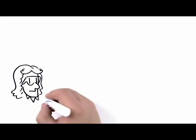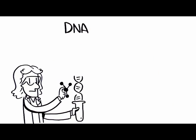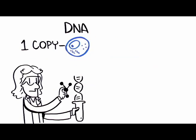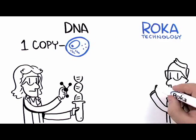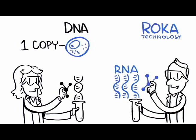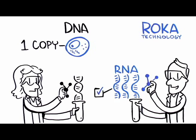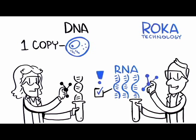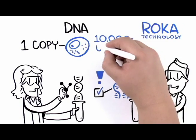While more dated molecular tests require DNA as a target, with only a single copy per cell, Roka technology utilizes the more plentiful RNA. This enhances the overall sensitivity and provides improved detection as there can be up to 10,000 times as many copies of RNA than DNA in any given cell.